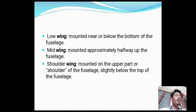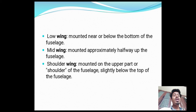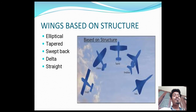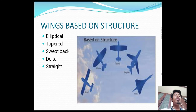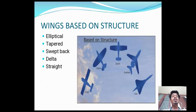Based on position: low wing is mounted near or below the bottom of the fuselage; mid wing is mounted approximately halfway up the fuselage; shoulder wing is mounted on the upper part of the fuselage slightly below the top. Wing structures include elliptical, tapered, swept-back, delta, and straight wings. These wings are chosen based on aircraft performance and the desired angle of attack.